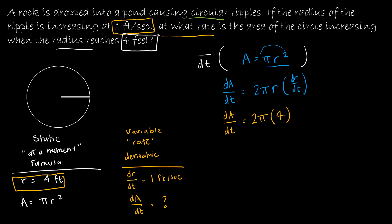And dr over dt is 1. Let's go ahead and leave our labels on there. This is 4 feet, and this is 1 foot per second.